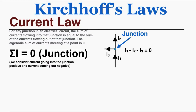As an example, if I have current 1 going into a junction and currents 2 and 3 coming out, I would say that positive I1 plus negative I2 plus negative I3 is equal to zero, because I2 and I3 are coming out of the junction. That's the information from Kirchhoff's current law for this junction.